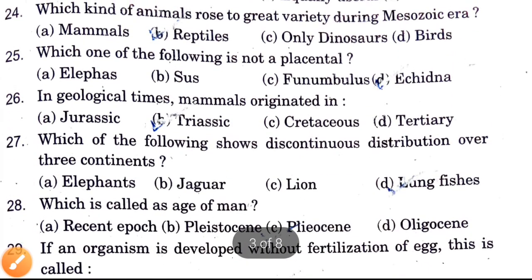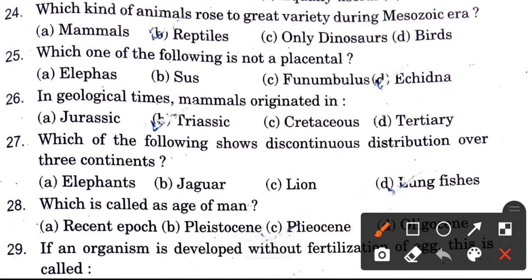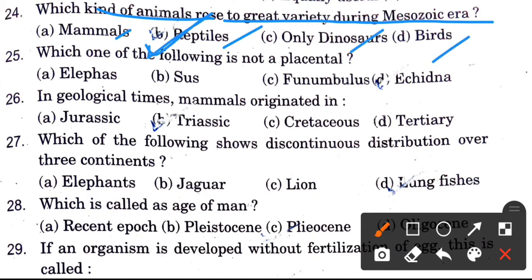Next question: What kind of animals rose to great variety during the Mesozoic era? Options are mammals, reptiles, only dinosaurs, and birds. The answer is reptiles.